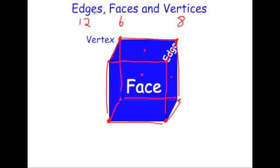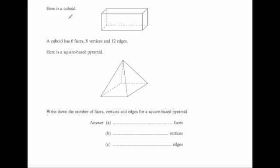So there are the different terms which you might need to know for your maths exams. Let's have a look at some typical questions now. Here is a cuboid. This is a nice question because it tells you to begin with — a cuboid has six faces: the front, the back, the left, the right, the top and the bottom. So it's six faces, eight vertices and twelve edges.